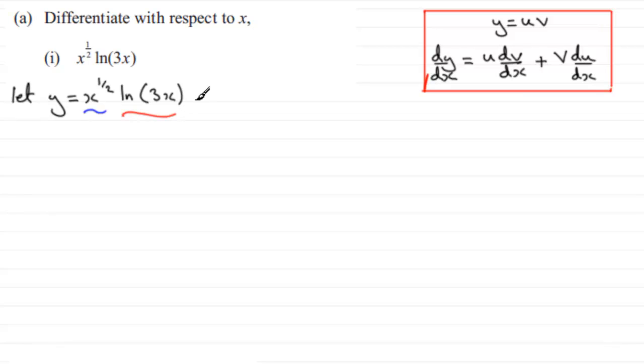So we're going to have, therefore, dy/dx is going to equal one of those parts, u, x to the power half, multiplied by the differential now of the other part, natural log of 3x. Notice I've written this part in brackets. I'd always encourage you to do that for each of the bits so that you don't end up writing ambiguous statements.